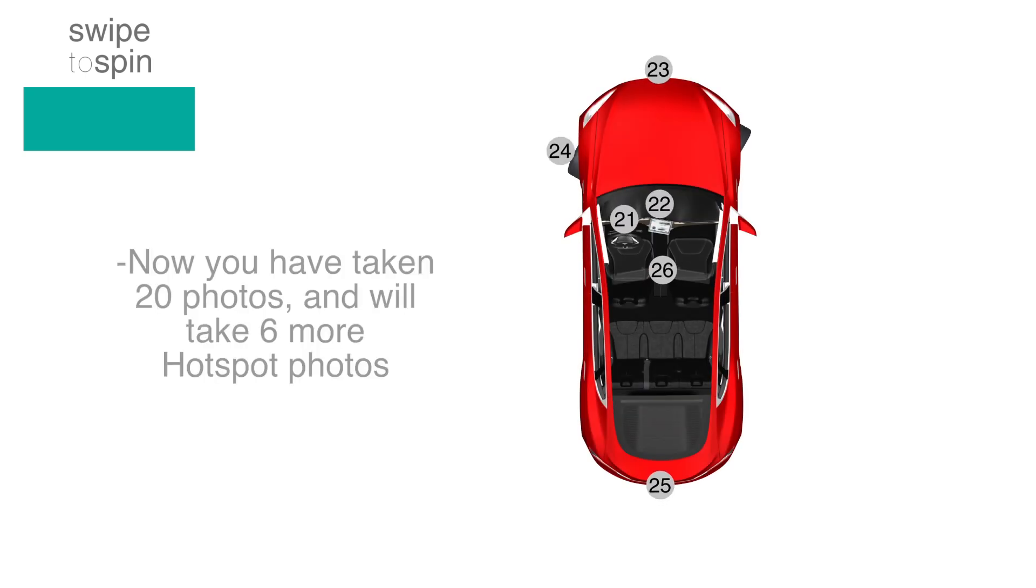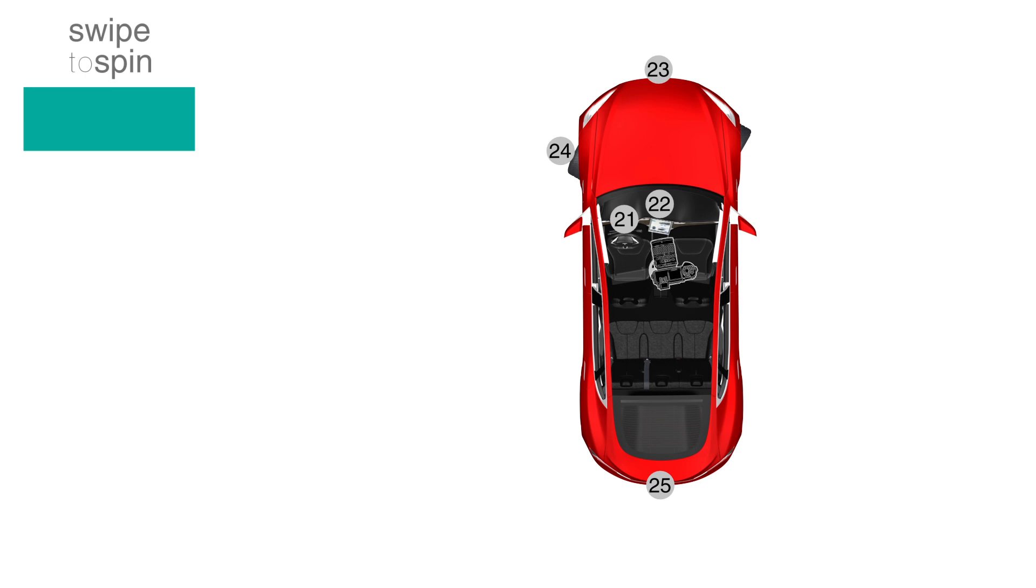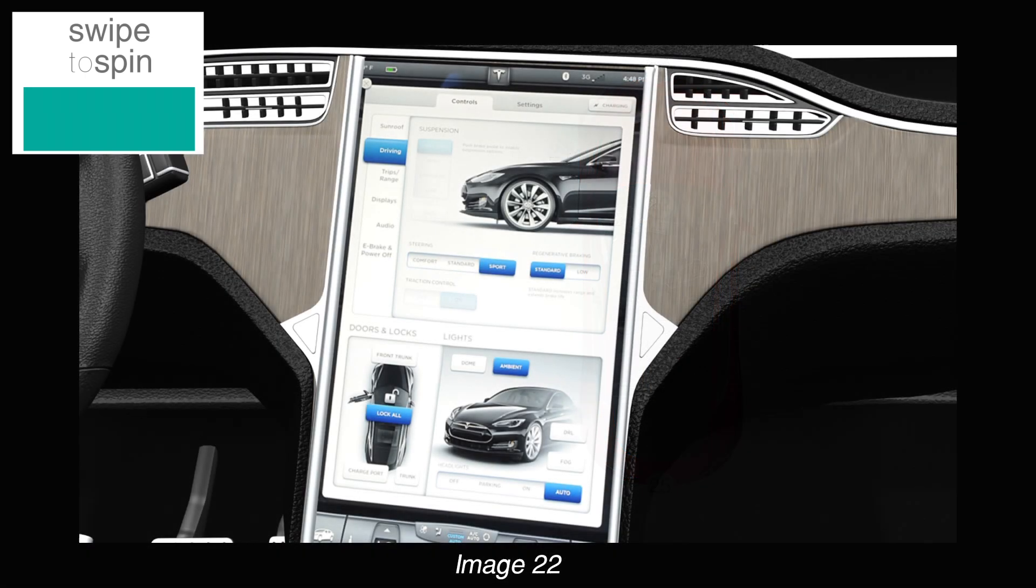It can be a bit tricky photographing the interiors of a two-door car, especially those without a back seat. The best way to handle these cases is to reach your camera arm into the car through the window.